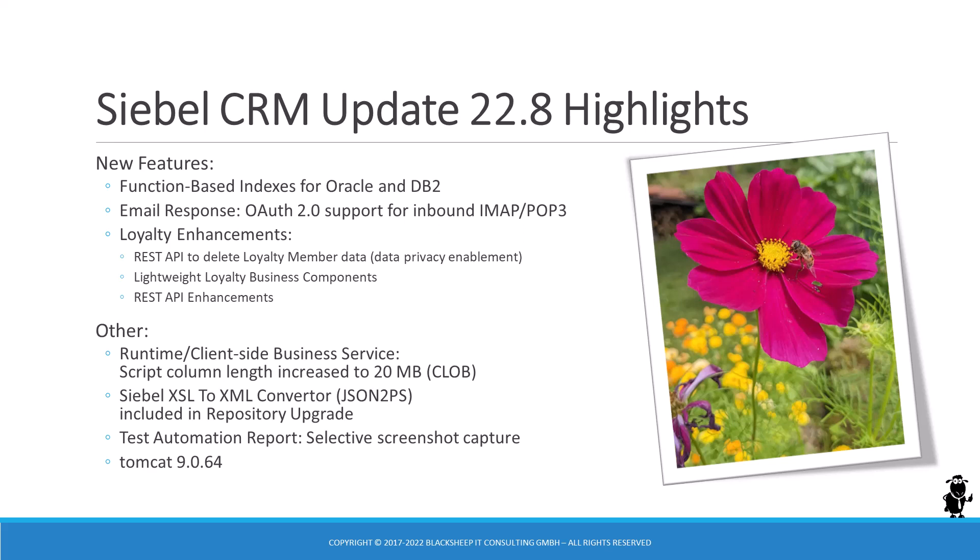Other noteworthy changes include a respectable growth in column width for client-side business service scripts, the uncloaking of the elusive XSL-to-XML converter business service, the ability to define selective screenshot capture in Siebel Test Automation, and an update for Tomcat. That's quite a handful, so let's dive right into the details.